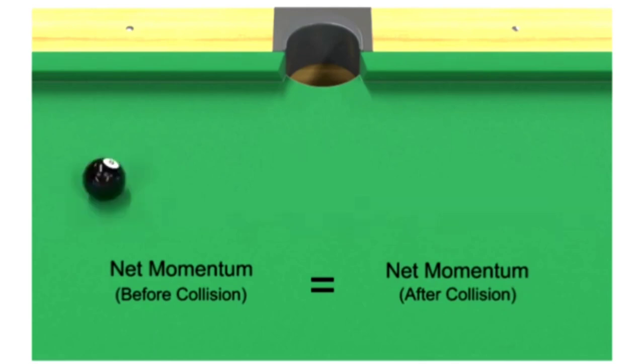If the eight ball is already in motion when a similarly moving cue ball collides with it, then the eight ball will gain some of the initial cue ball's momentum, and the net momentum before and after the collision will be conserved.